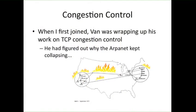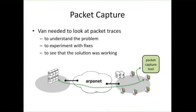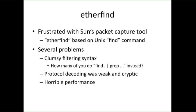When I first joined the group that summer, Van was wrapping up his work on TCP congestion control. He'd spent the last couple of years figuring out why the ARPANET would seize up under too much load and completely stop working. He figured out we needed to add congestion control to TCP — slow start and the congestion avoidance algorithms. To do that work, he needed to look at packets on the network. We had Sun workstations, and there was this tool EtherFind that came with SunOS. Van was frustrated with it because it had a clumsy filtering syntax, the protocol decoding and printing wasn't very good, and it had really horrible performance.